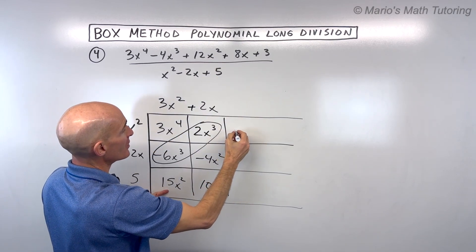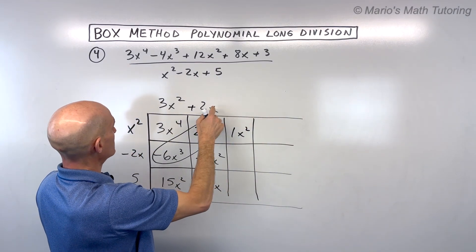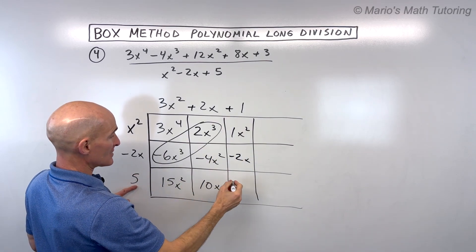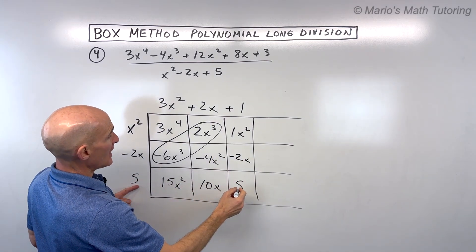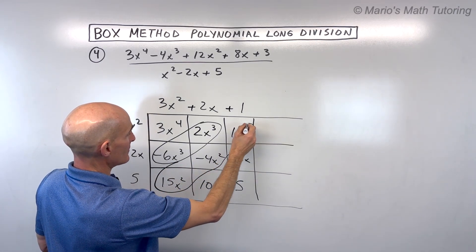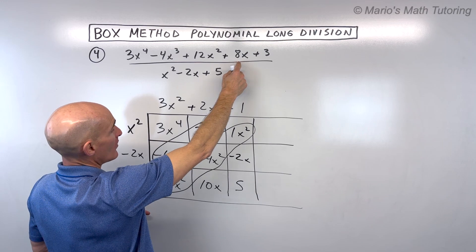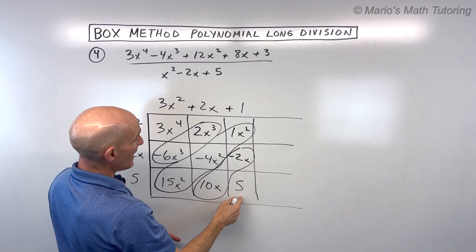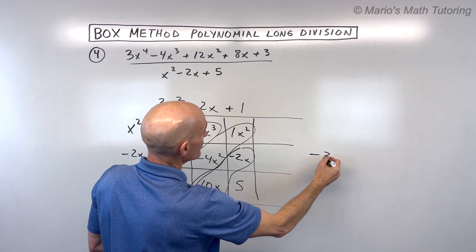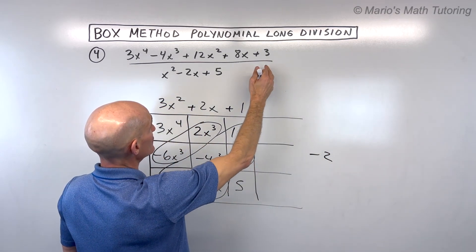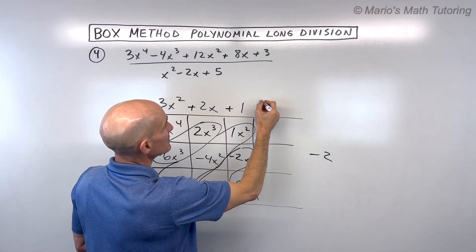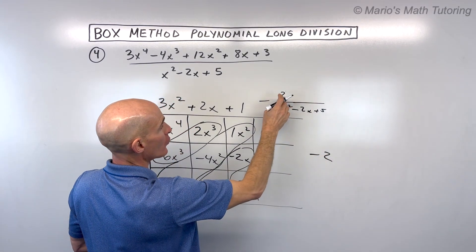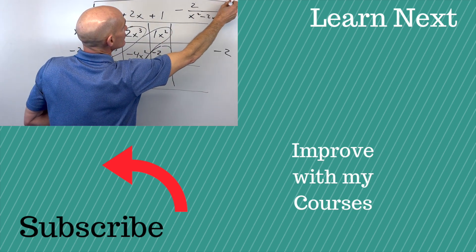We've got 15x squared plus negative 4x squared, which is 11x squared, but we need 12x squared, so we need another 1x squared. What times x squared is 1x squared? That's 1. Distributing gives negative 2x and 1 times 5 is 5. This diagonal adds up to 12x squared. For the x terms: 10x minus 2x is 8x — great, that's exactly what we want. And then we've got 5, but we want 3, so we have a remainder of negative 2 — because 5 plus negative 2 gives us back the 3. The final result is this minus 2 over x squared minus 2x plus 5. You put the remainder over the divisor, and that's your final result.